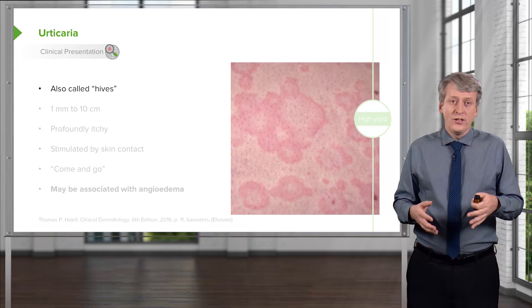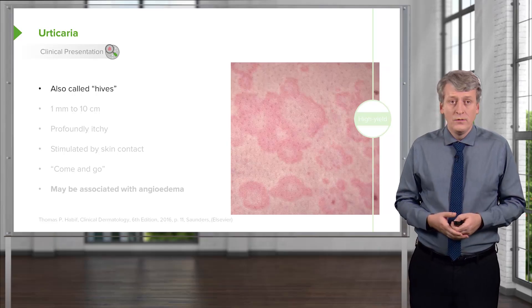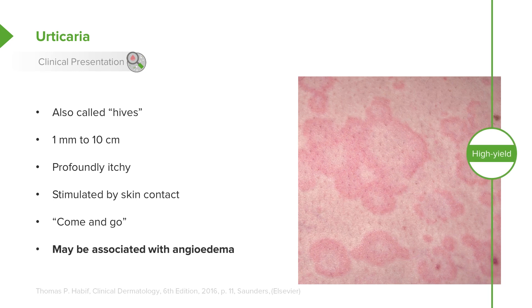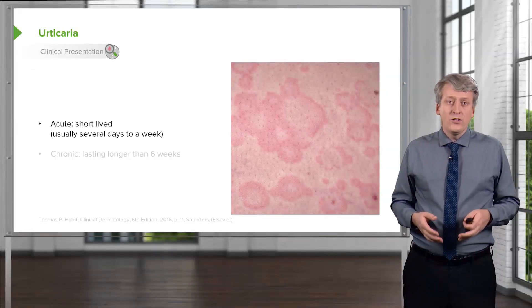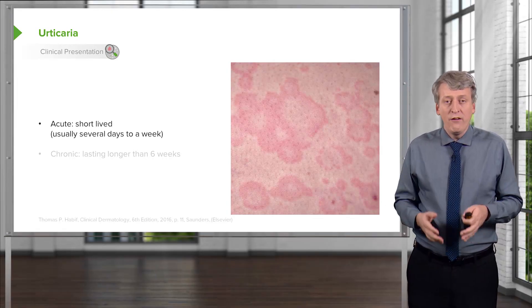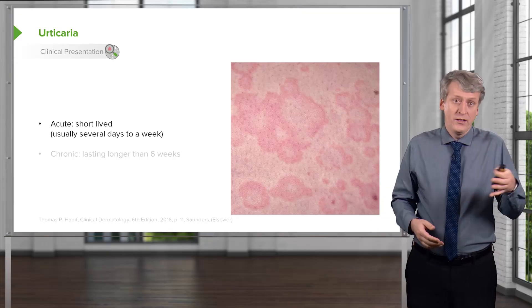Urticaria is our classic type 1 hypersensitivity reaction — we also call it hives. These lesions will be anywhere from 1 mm to 10 cm large. They are profoundly itchy and stimulated by skin contact, which means the more you scratch them, the more they itch. They sort of come and go even before your eyes — you may walk in, see a patient with hives, and before you're done with your conversation, the one on the leg is gone and there's a new one on the arm. They may be associated with angioedema, which is another type of type 1 hypersensitivity reaction.